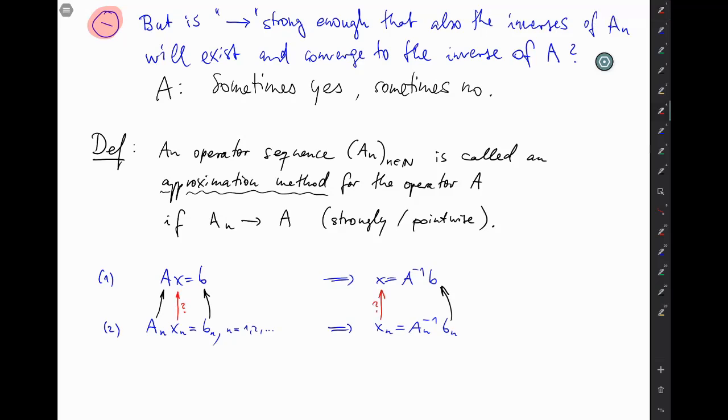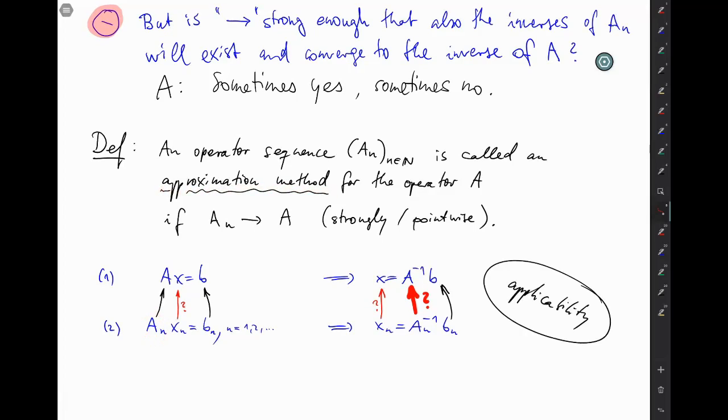And just like we saw last week, it all comes down to the question whether or not these inverses here converge, and now indeed strongly is enough, to the inverse of A. If that happens for every right-hand side B, and for every sequence of right-hand side B_N that converges to B, and if we can invert the equation at least for sufficiently large N, then this is exactly what we call applicability of this operator sequence, or now we will say of this approximation method.